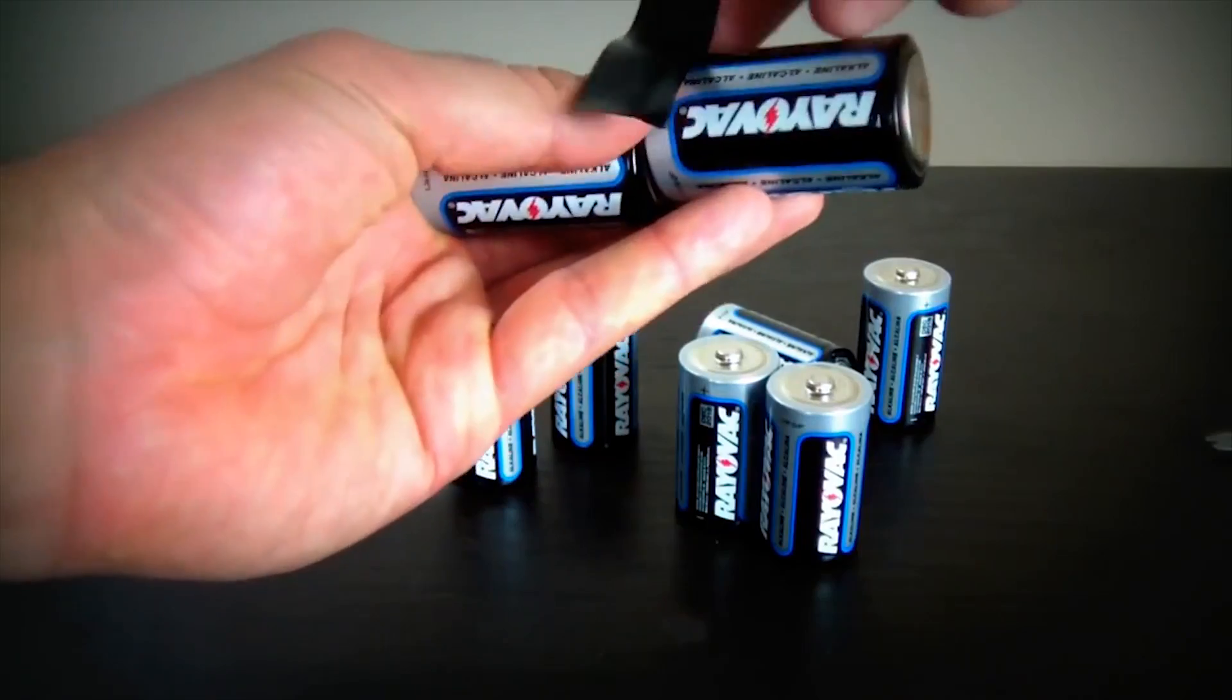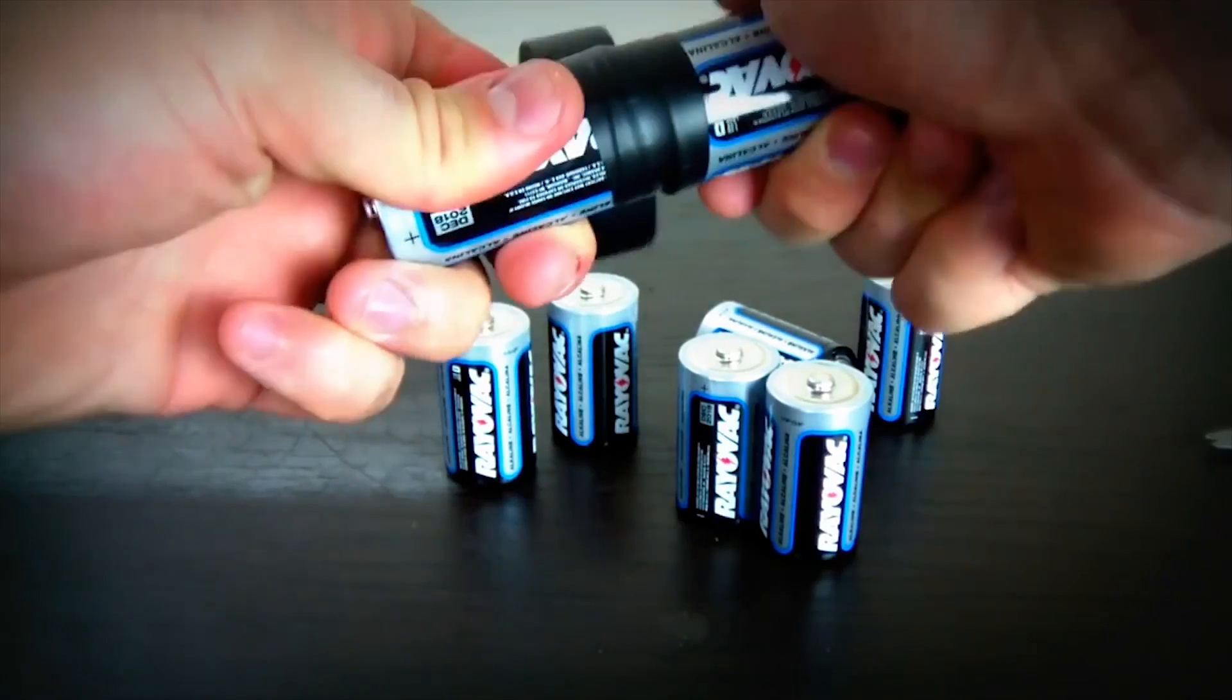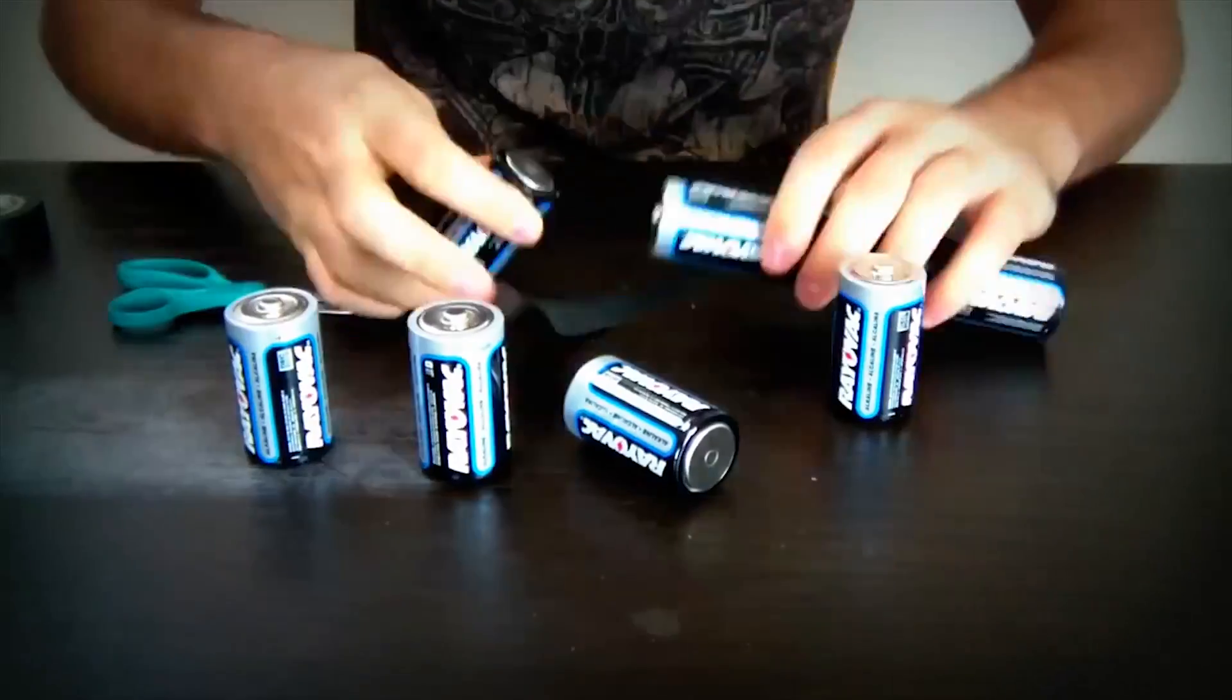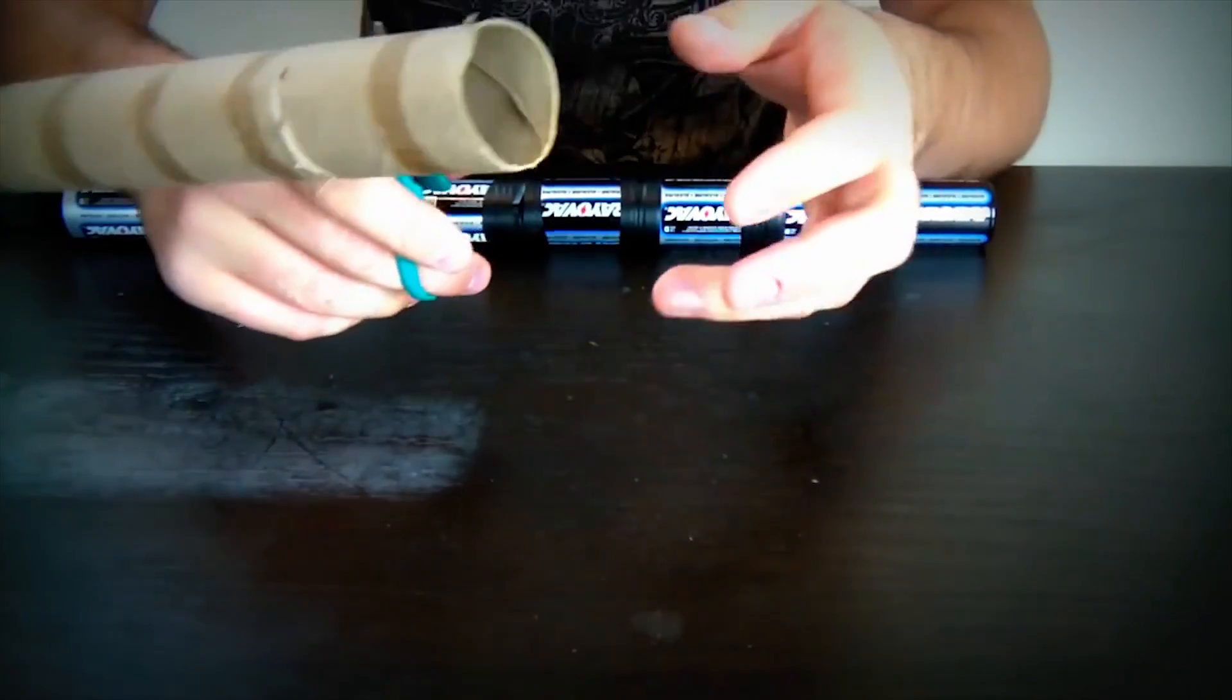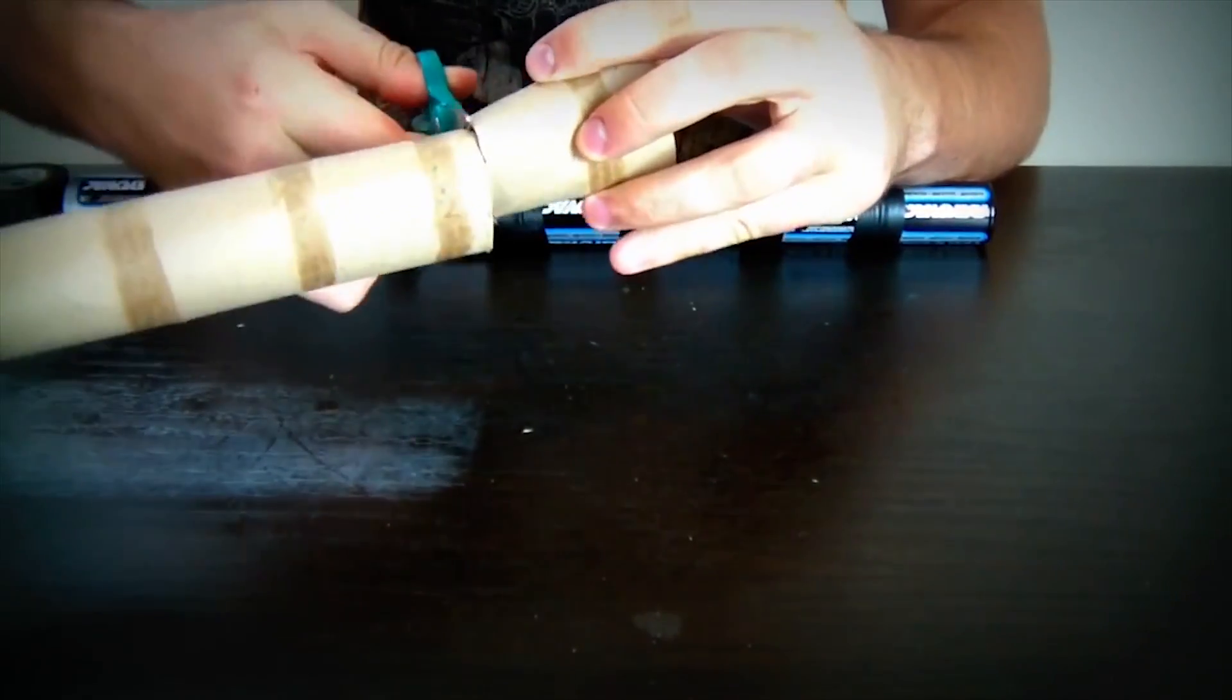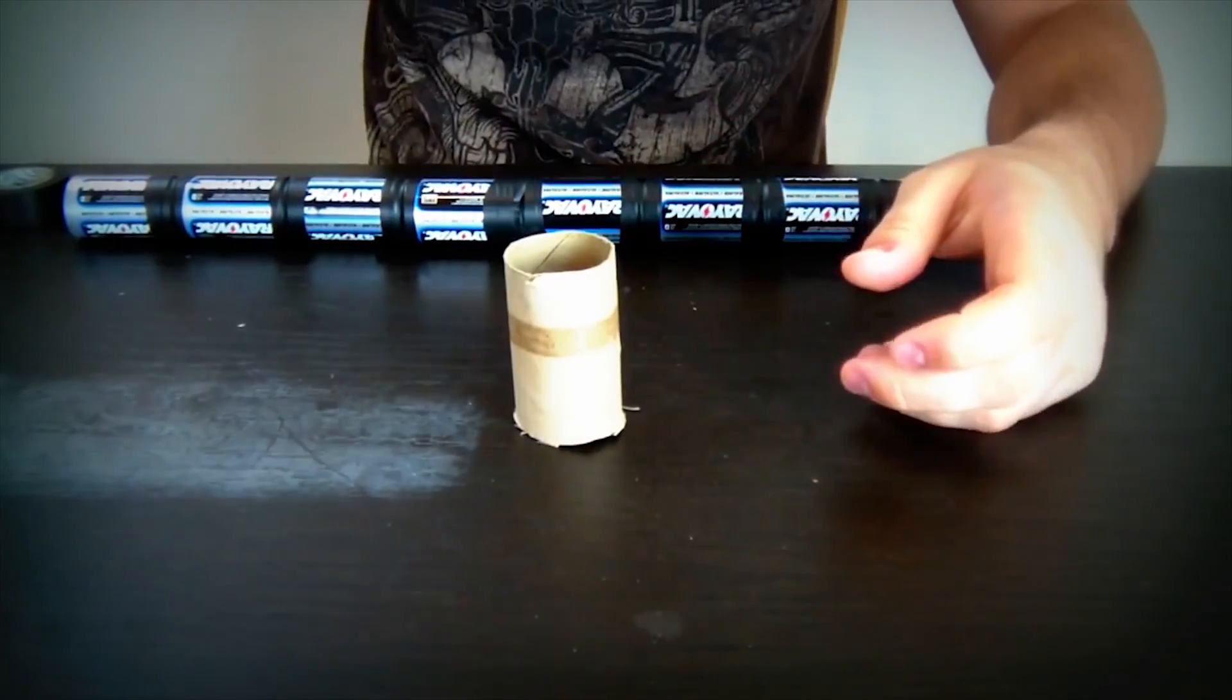Tape them up together. You're gonna have to do all of them like that. Make sure they're attached. Alright. Next we're gonna cut the paper. We just need a small piece of it.